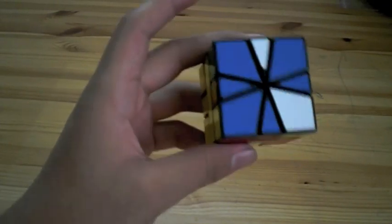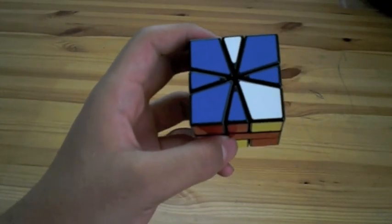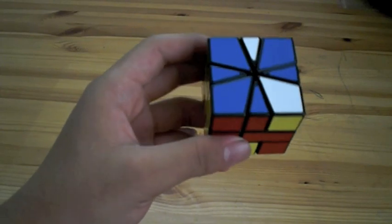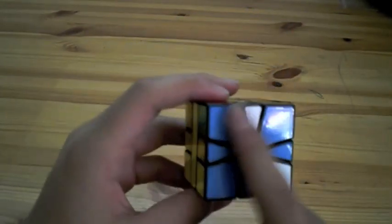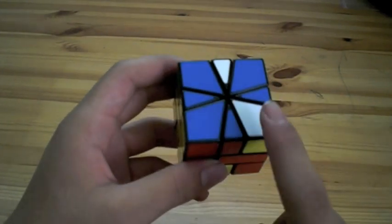The next step of solving the Square-1 after you've gotten it back into cube shape is to get all of the corners into the right layer. My top layer is always going to be blue because I use Japanese color scheme.